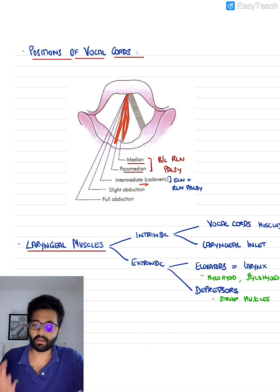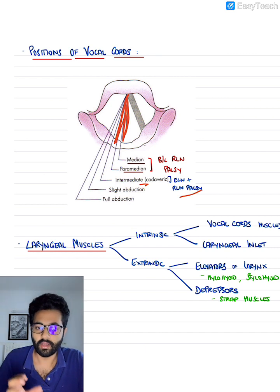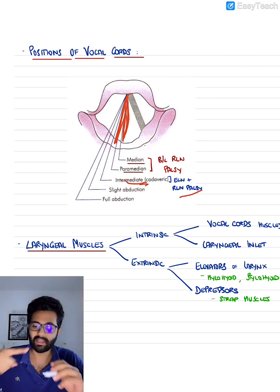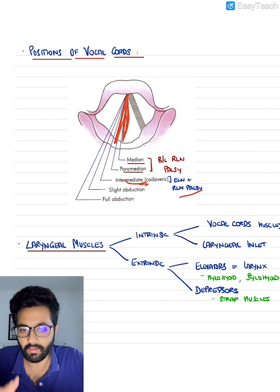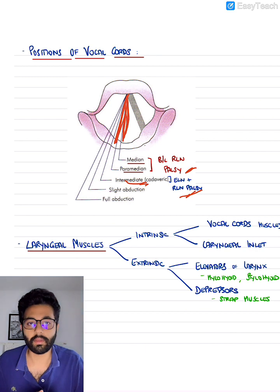And sometimes you can remember if ELN, the external laryngeal nerve and the RLN both are injured, then the cords get stuck in the intermediate position or the cadaveric position. So the ELN plus RLN is actually safer than bilateral recurrent laryngeal nerve palsy.